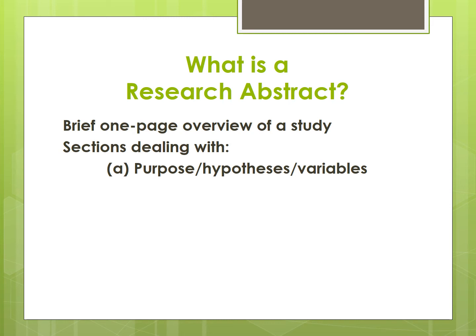The research abstract is not an essay and it's not creative writing. All it is is sectioning off for a given research article: what is the purpose of the study — which you ought to be able to find right at the end of the literature review, right before you get to the methodology, where most authors will say the purpose of the study is. So a shortened version of that. If there are any research questions or hypotheses, that's where they go, and then identifying the independent and dependent variables. That's one section.